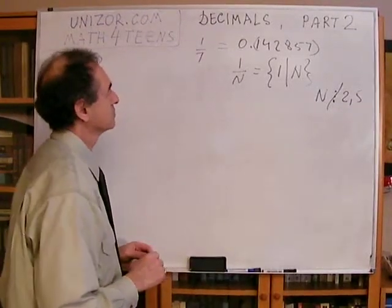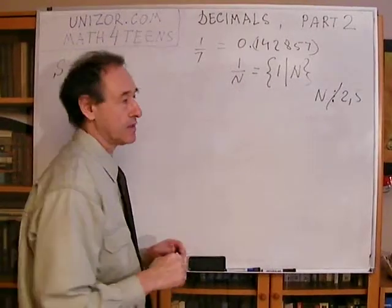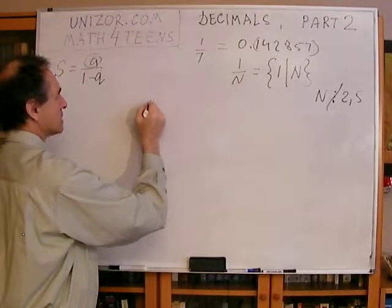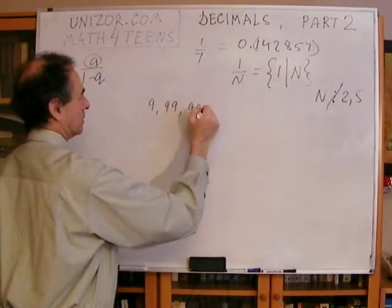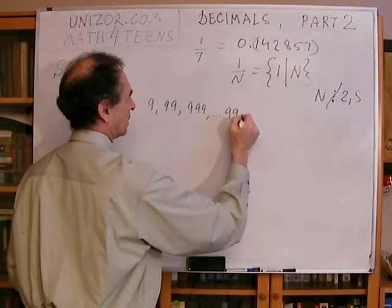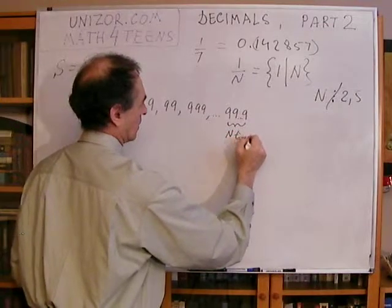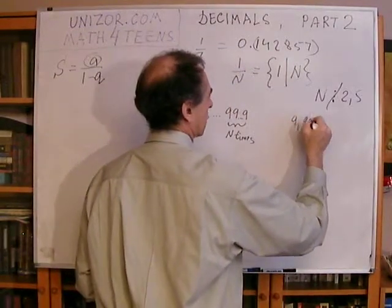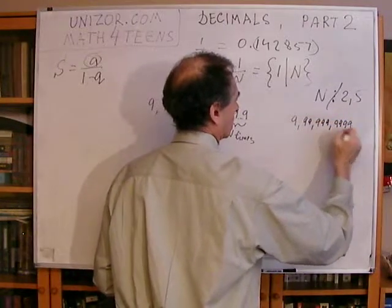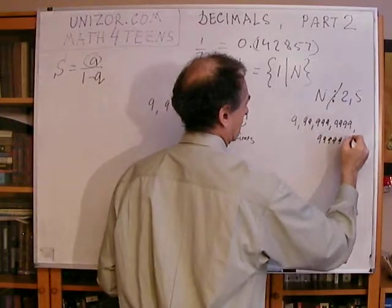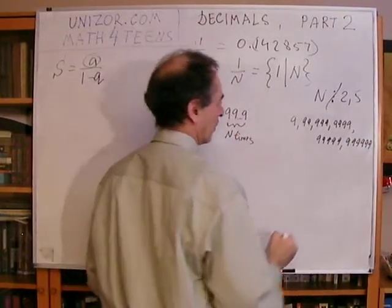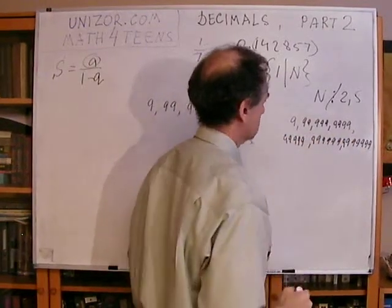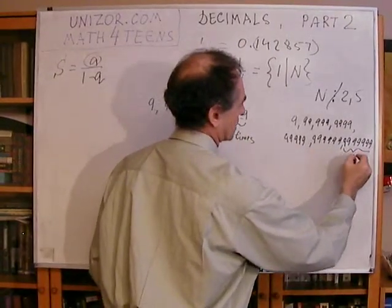Now the proof. I will use 1 over 7 as an example. In general, if I have 1 over N, I will consider N numbers: 9, 99, 999, etc., up to N nines in a row. In my particular case of 1 over 7, I consider 7 numbers: 9, 99, 999, 9999, 99999, 999999, and one more — 7 numbers from 9 to seven nines.